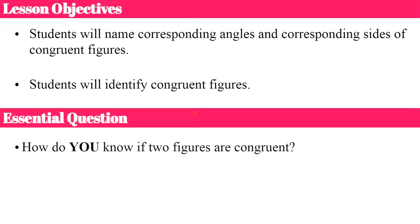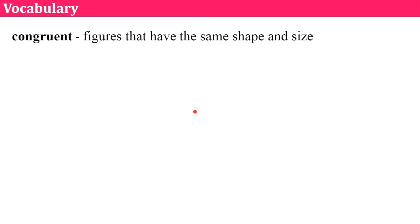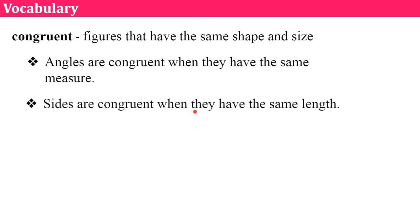Here's what I'd like you thinking about today as I proceed through the lesson: how do you know if two figures are congruent? Vocabulary that you need to understand today is the word congruent. Figures that have the same shape and size are congruent. Angles are congruent when they have the same measure, and sides are congruent when they have the same length. We're going to use these ideas of congruent to build on identifying congruent figures.